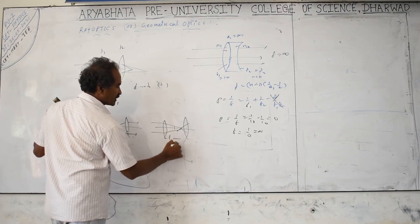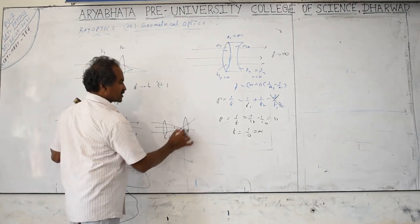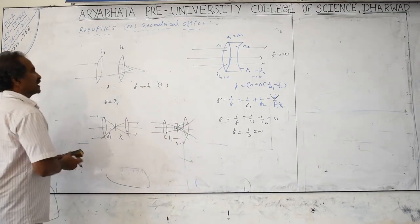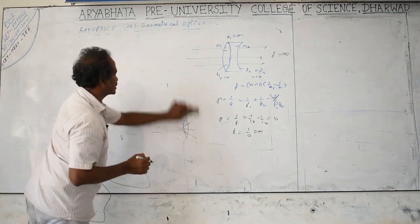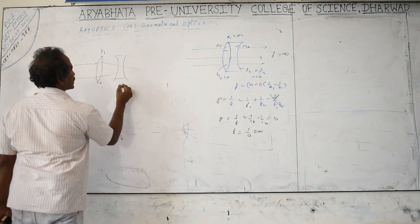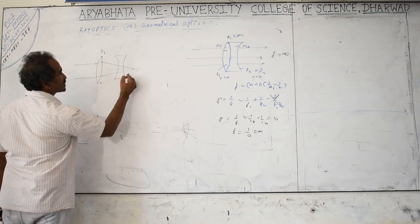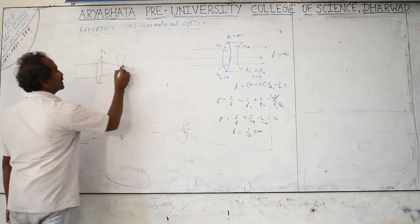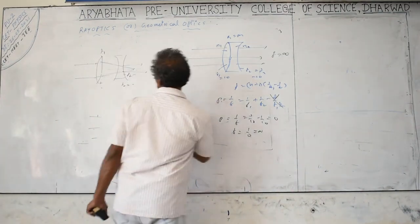If the image formed by the first lens falls within the focus of the second lens, the rays diverge and form a virtual image on the same side as the object. For a convex-concave combination, if rays converging toward the focus of the first lens are intercepted by the concave lens and meet at the virtual focus f2 of the concave lens, the emergent rays become parallel.